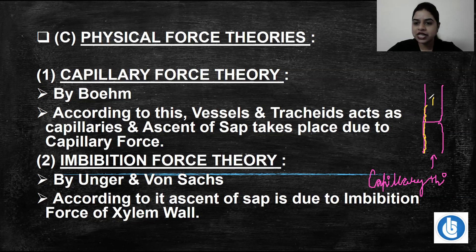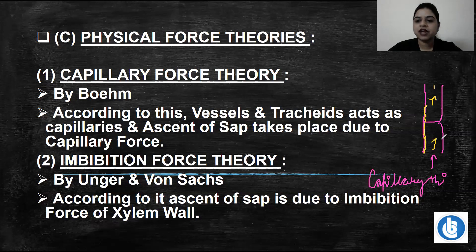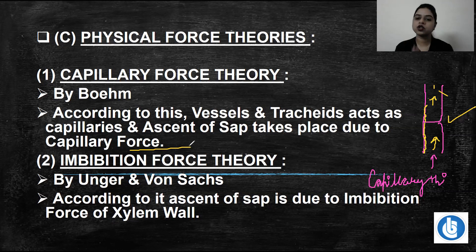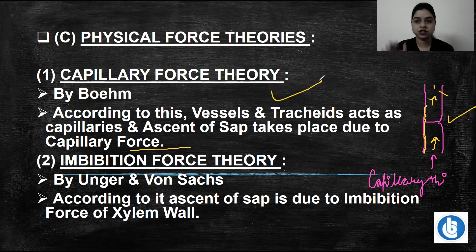The shifting of water to other cells and other parts of the plant is the concept of transfer of water that is activated because of capillary force. The capillary shifting happens through capillaries, which are the tracheids and vessels. So this theory is called the capillary force theory. Although it is not very widely accepted, it is not entirely wrong either.